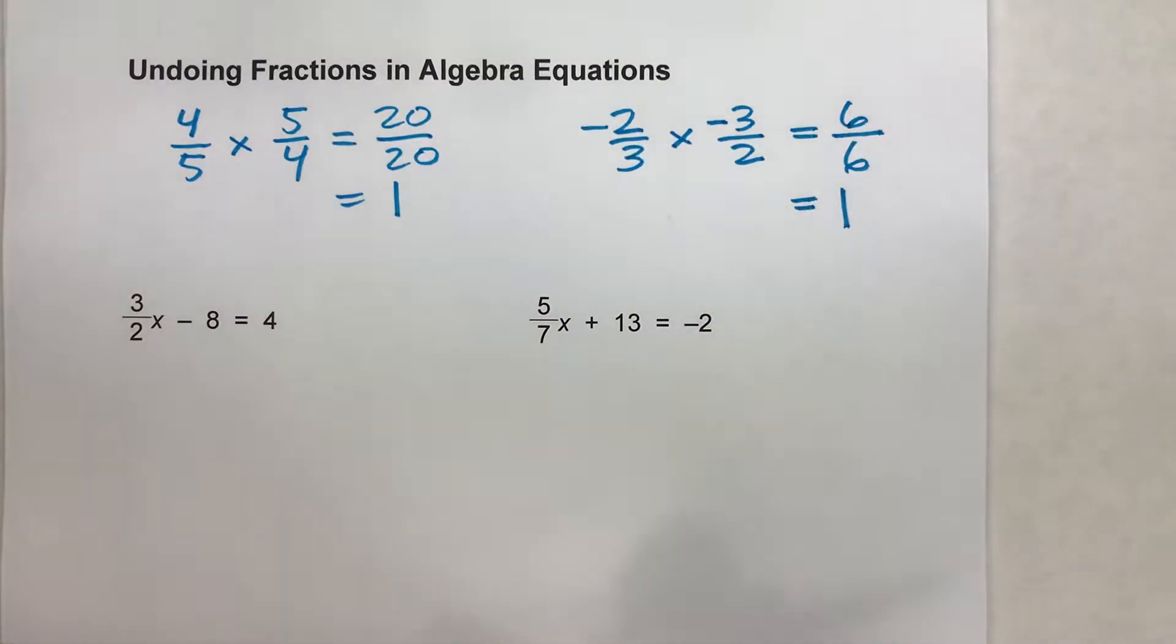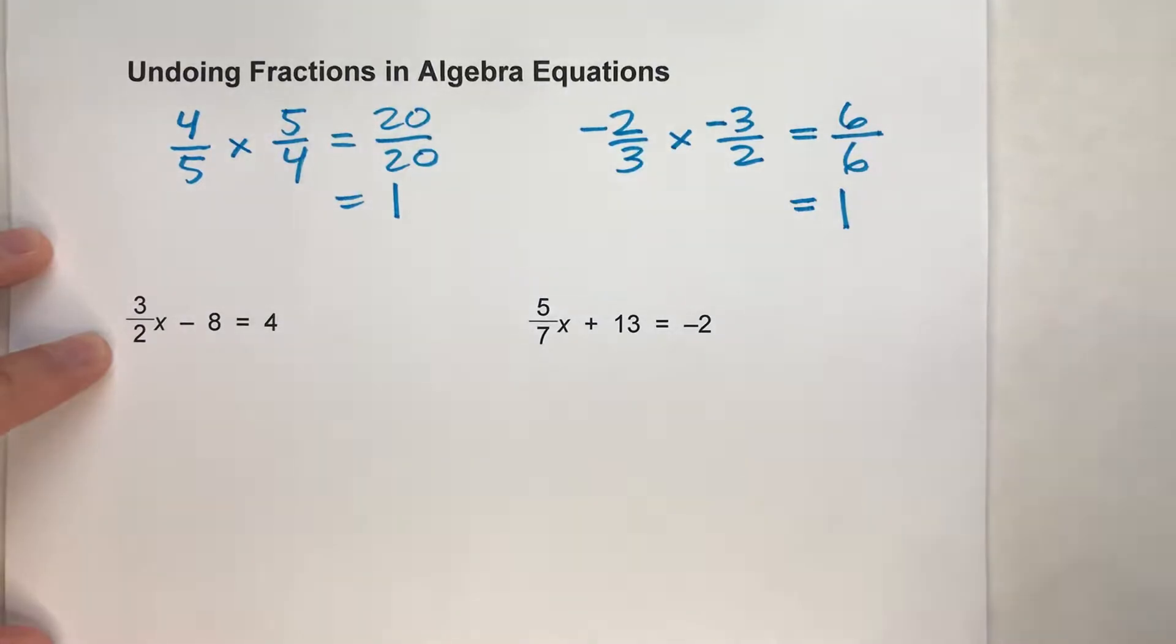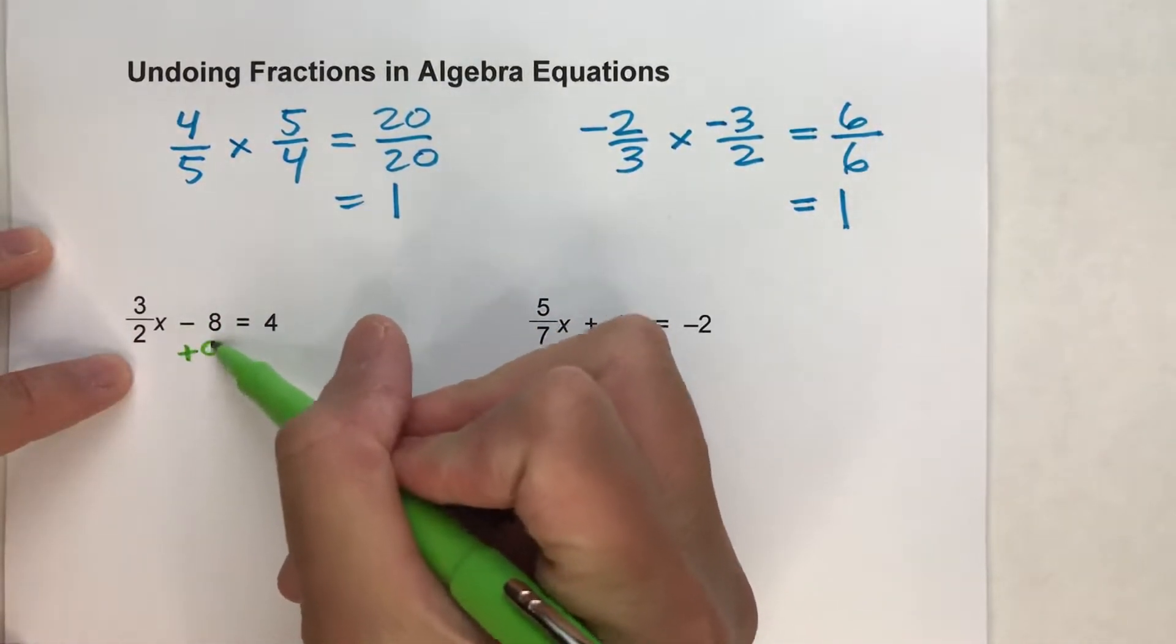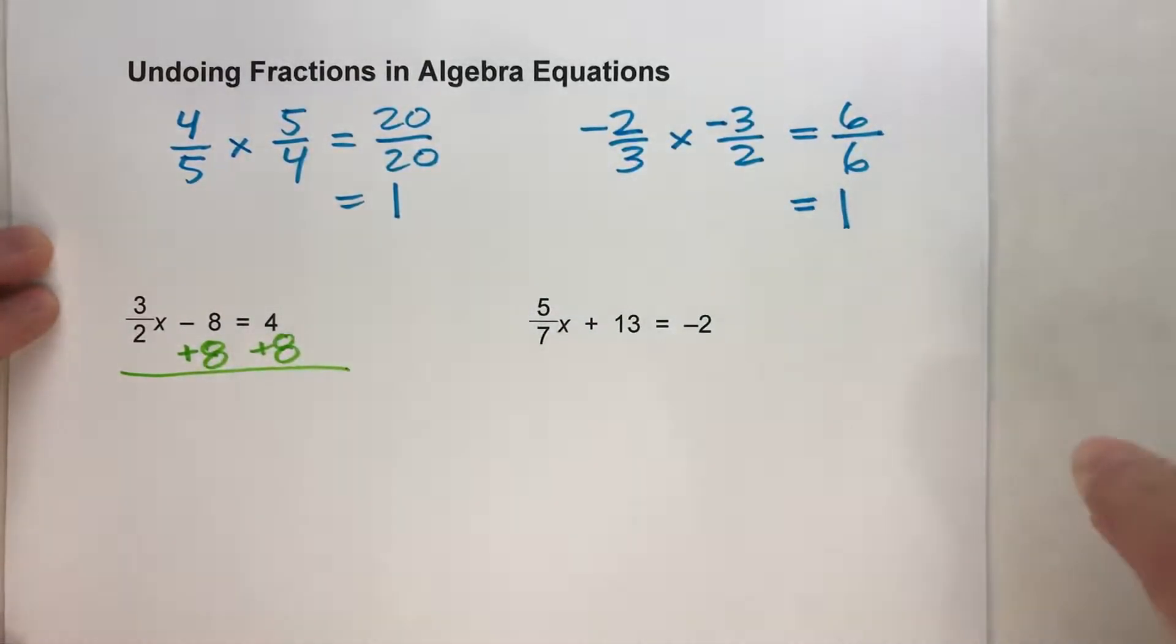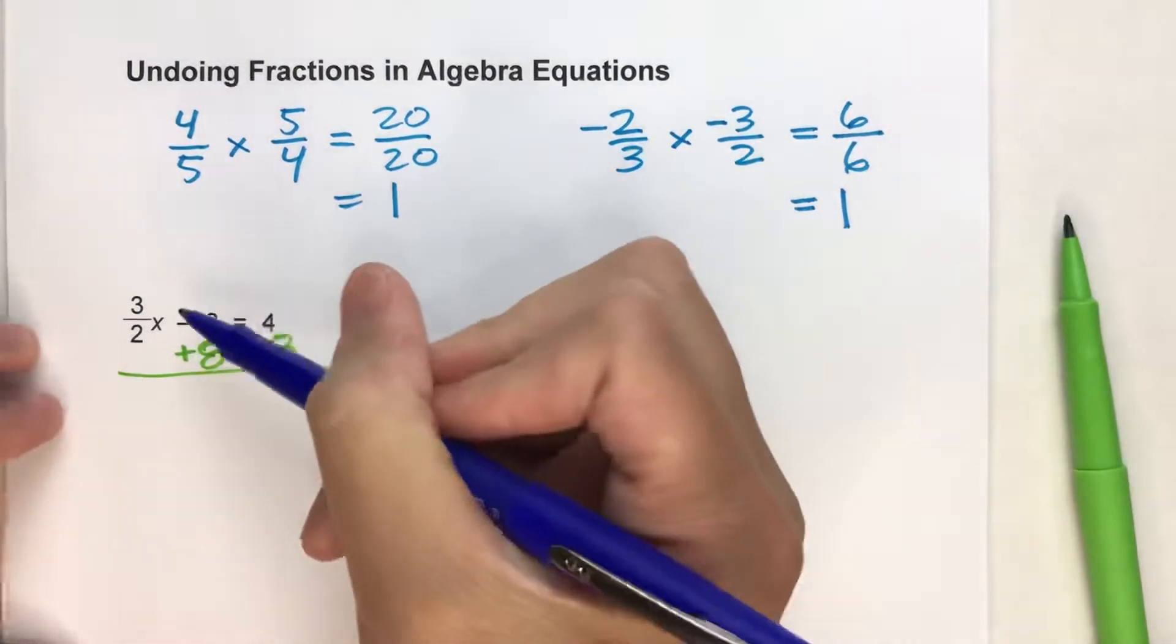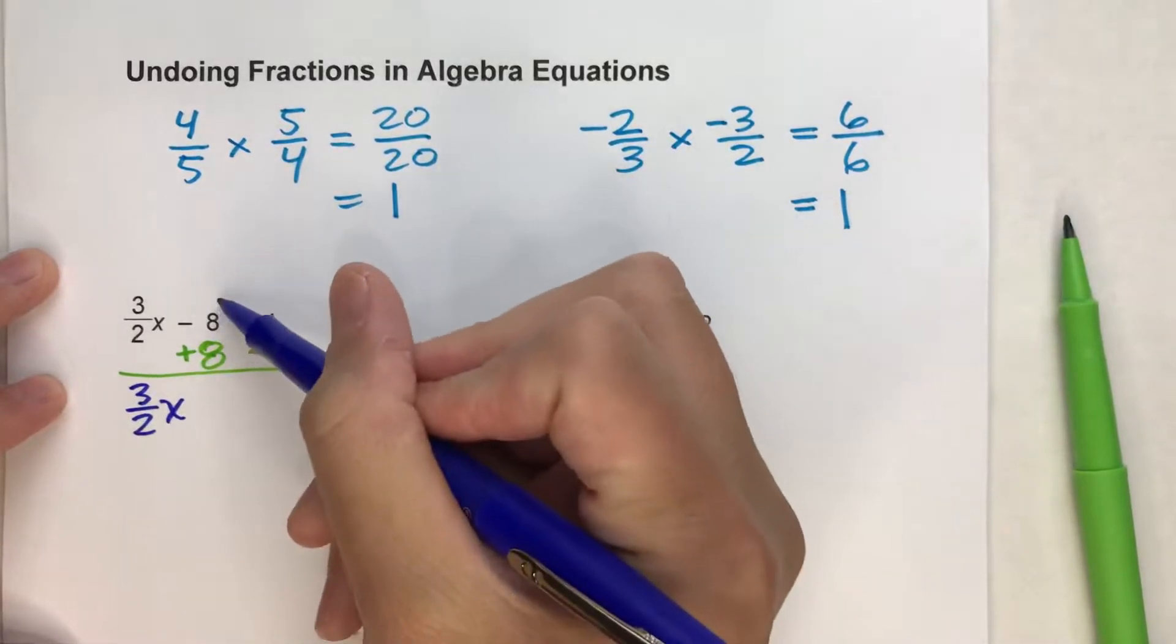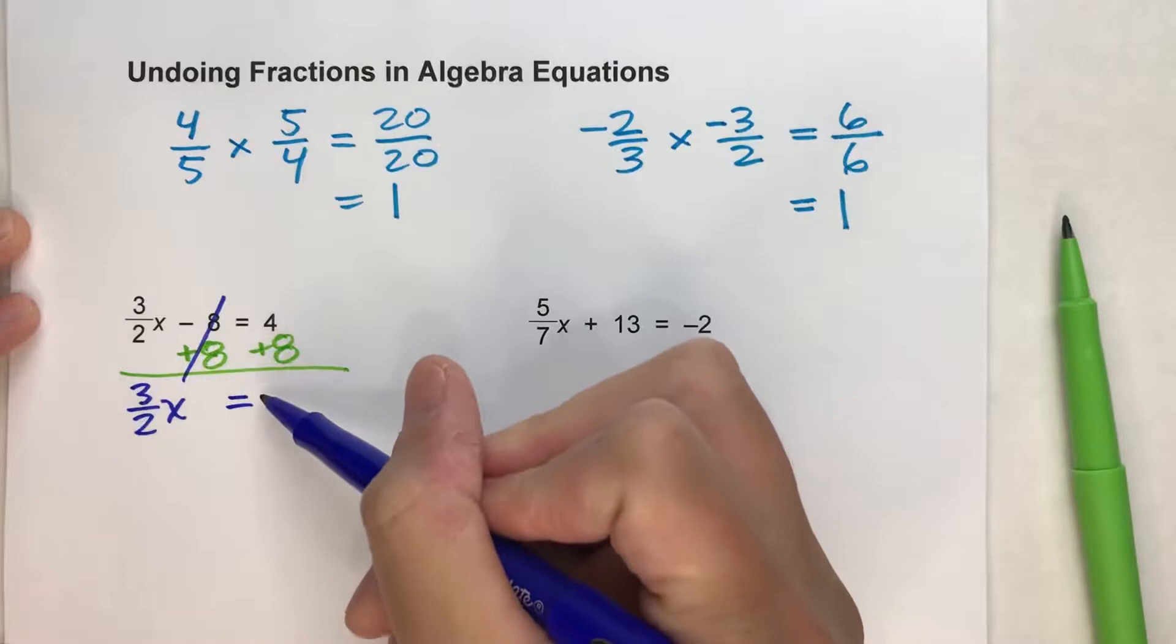I'll show you what I mean. Let's take a look at this first one. 3 halves x minus 8 equals 4. To solve this, I first have to undo the minus 8. So I'm going to add 8. What I do to one side of the equal sign, I have to do to the other side. When I do that, notice the 3 halves x, I haven't touched it, so it drops down. These undo each other, equals drops down. And 4 plus 8 is 12.